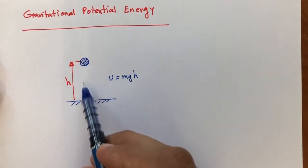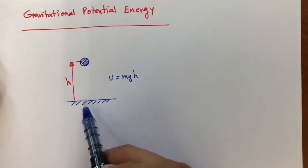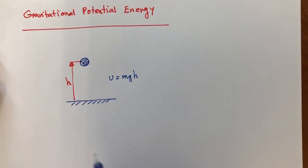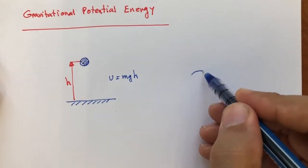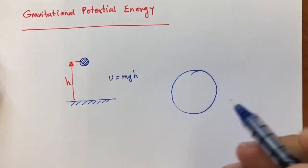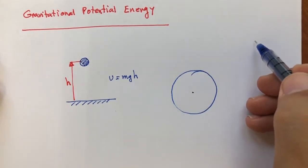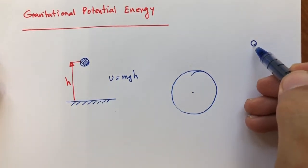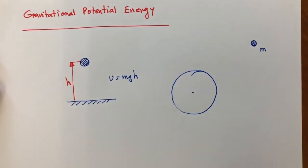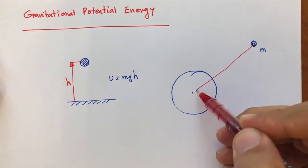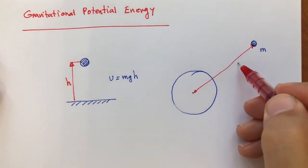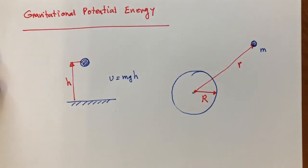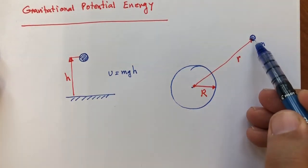If the distance of your object from the surface of the earth is changing, or if it is already far away from the surface of the earth, then this equation is not going to work. We have another equation for it. If you have an object with mass m and the distance from the center of the earth is small r, and the radius of the earth is capital R...